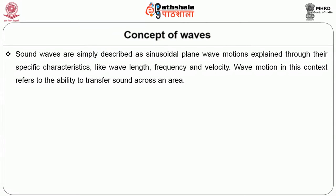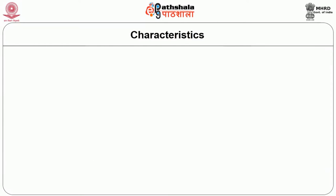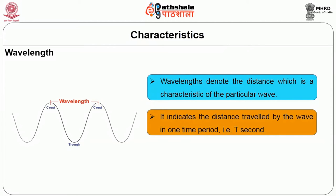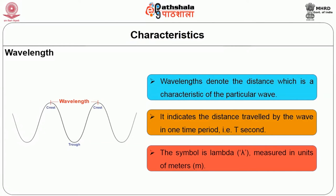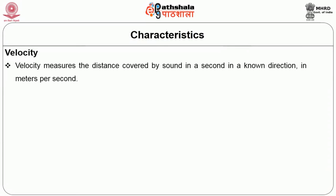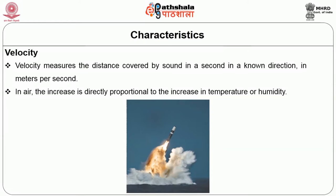Wave motion refers to the ability to transfer sound across an area. People use symbols agreed upon by convention to label characteristic quantities of waves. The first characteristic is wavelength — it denotes the distance travelled by the wave in one time period (t seconds), symbolized by lambda, measured in meters. The second characteristic is velocity — it measures the distance covered by sound in one second in a known direction, in meters per second. In air, velocity is directly proportional to the increase in temperature or humidity.